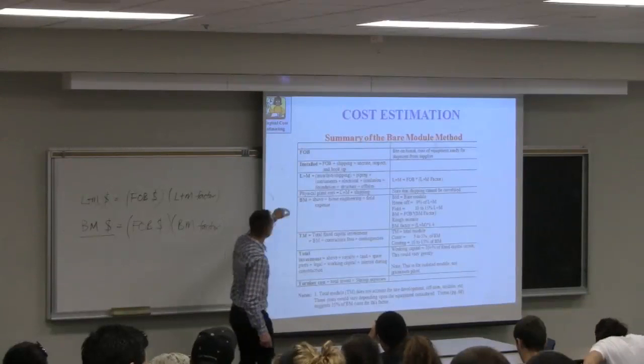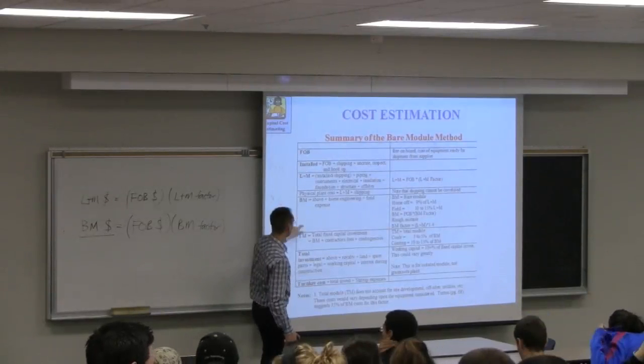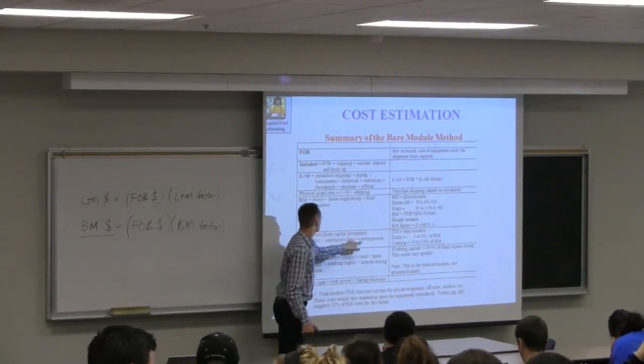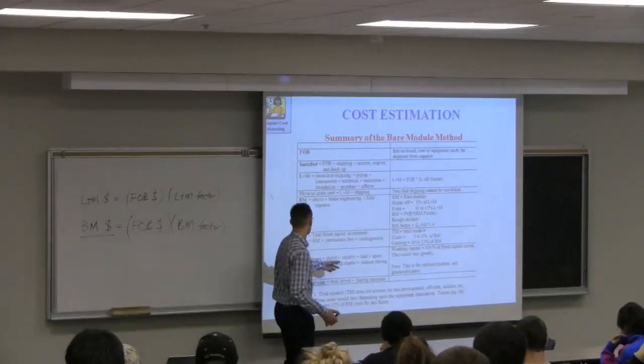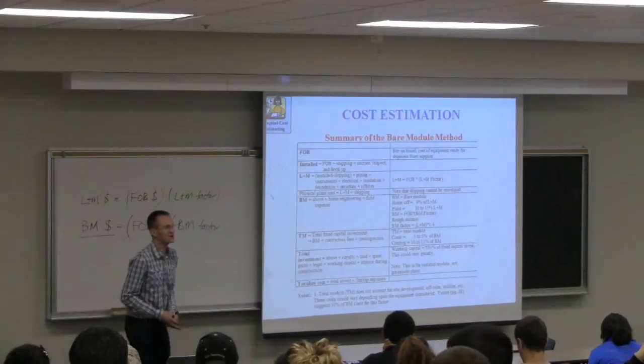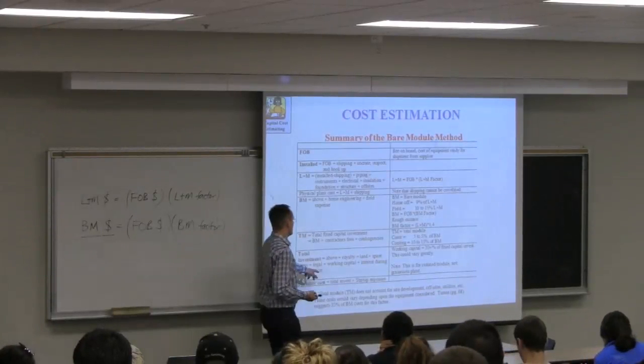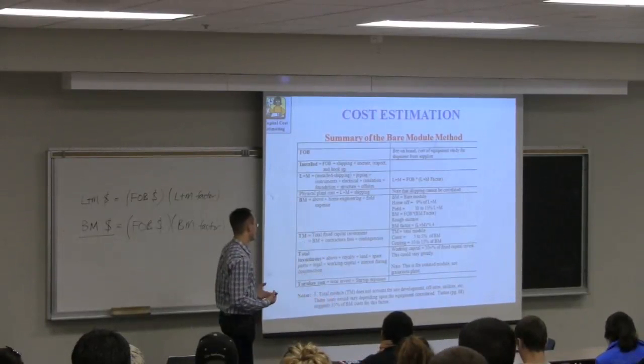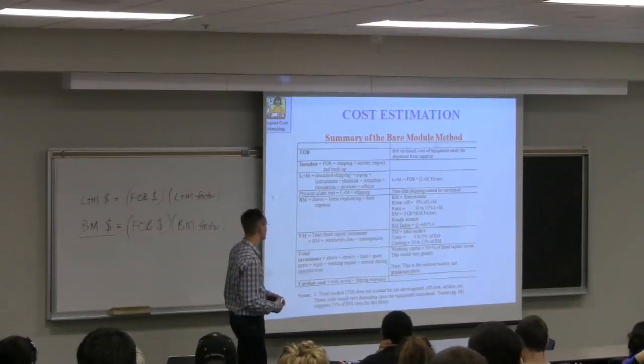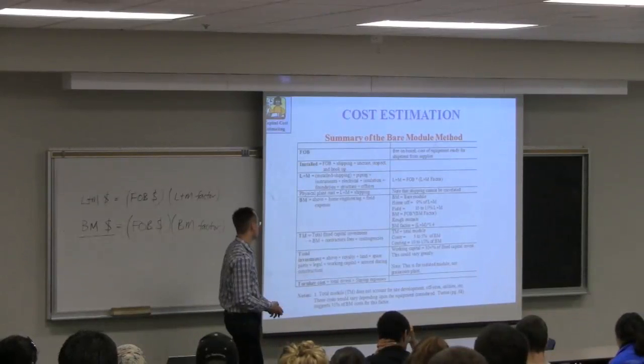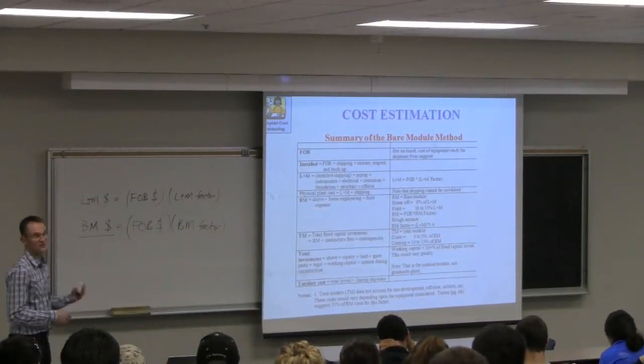So we've got our FOB costs that we get from the quotations from the vendor, our labor and material costs, our bare module costs. We add in, once we have our bare module costs, the contractor fees and contingencies to get our total fixed capital investments. Then we still have additional costs we have to incur, we have to buy the land, legal expenses, accountants and other labor and overheads. This really is a bit harder to estimate. It's a very crude estimate here. You would have a better sense of this if you actually were working in a company. So we don't try to focus on this too much because it can be quite specific to the case you're doing. And then you get your total investment cost. This is your total capital expense that you then report in your cash flows that we've been doing up to now.